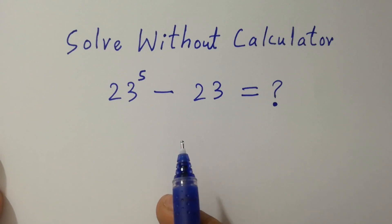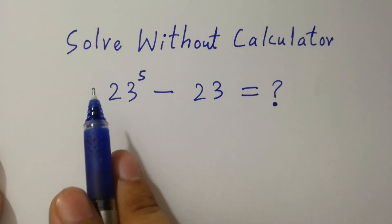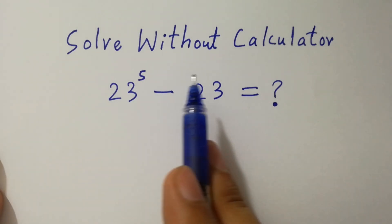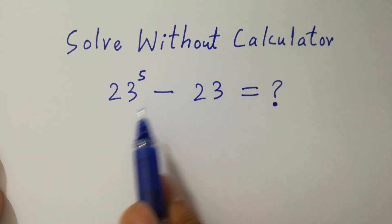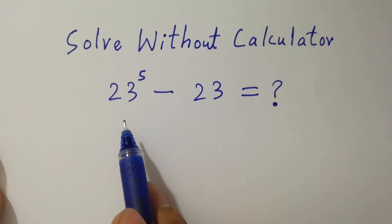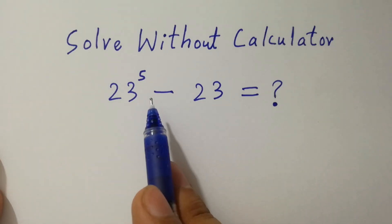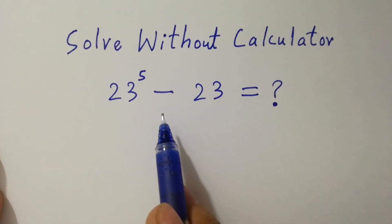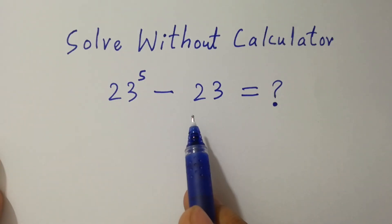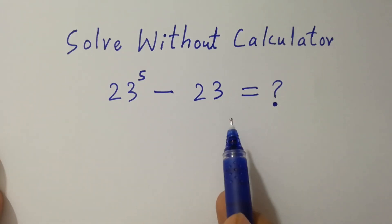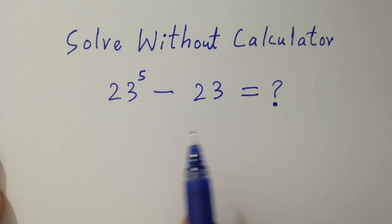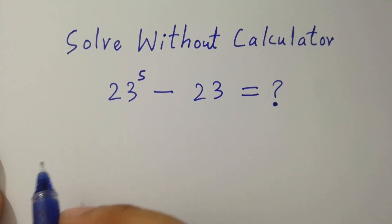Hello friends. Solve without calculator: 23 to the power 5 minus 23 equals what? Let's have a solution.